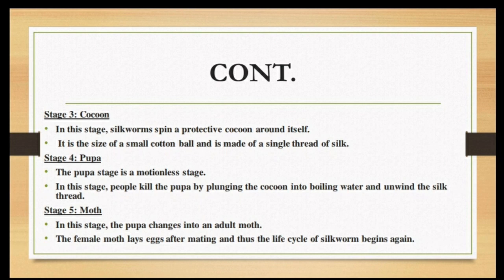Stage 4: Pupa. The pupa stage is a motionless stage — no motion occurs. In this stage, people kill the pupa by plunging the cocoon into boiling water, which unwinds the silk thread. The last stage is the moth, where the pupa changes into an adult moth. The female moth lays eggs after mating, and thus the life cycle of the silkworm begins again.